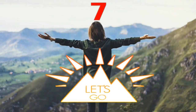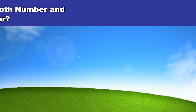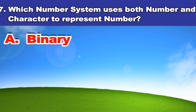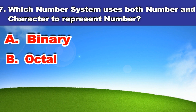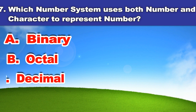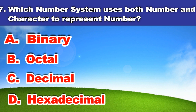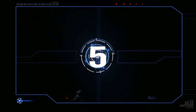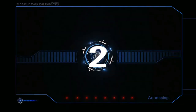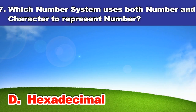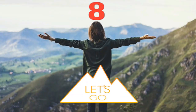Seventh question. Which number system uses both numbers and characters to represent numbers? A. Binary, B. Octal, C. Decimal, D. Hexadecimal. And the answer is: Hexadecimal.